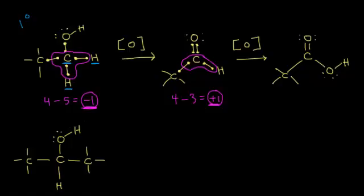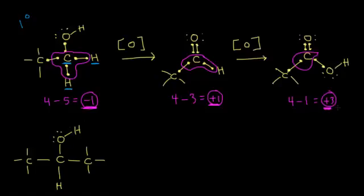Let's look again at the oxidation state of the carbonyl carbon. I put in my electrons and think about electronegativity. Oxygen beats carbon; there's a tie between the two carbons; and oxygen beats carbon again. In this case, normally four valence electrons, now there is one, so four minus one gives an oxidation state of plus three. An increase in the oxidation state means oxidation. If you oxidize an aldehyde, you will get a carboxylic acid.